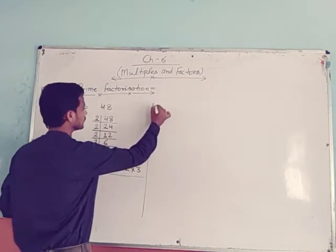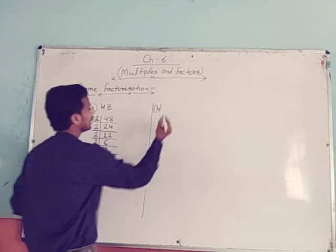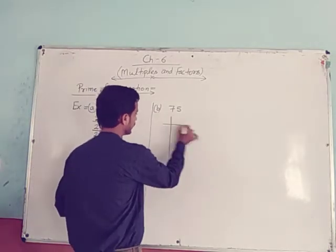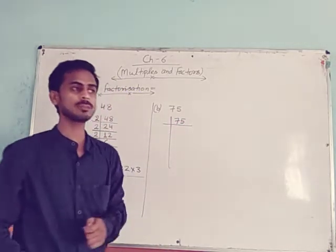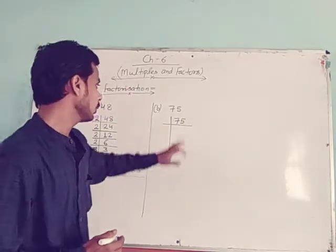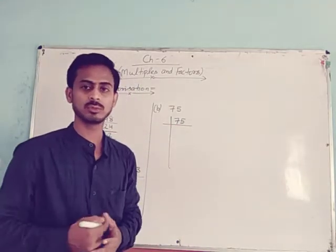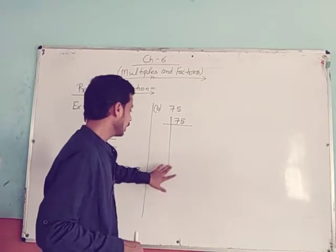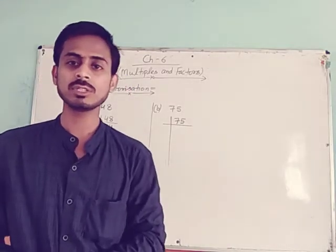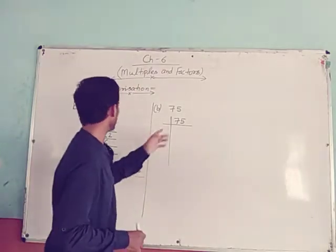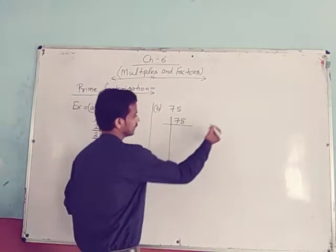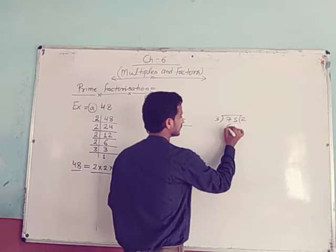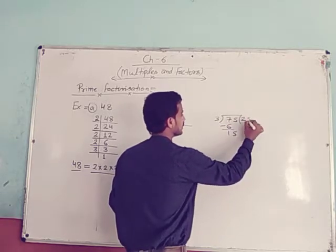See another example. This one is A: 75. Find the prime factorization of 75. The smallest prime number is 2, but when you divide 75 by 2, you get a remainder of 1. We take only numbers which divide completely. So the next number is 3. Divide 75 by 3 to get 25.